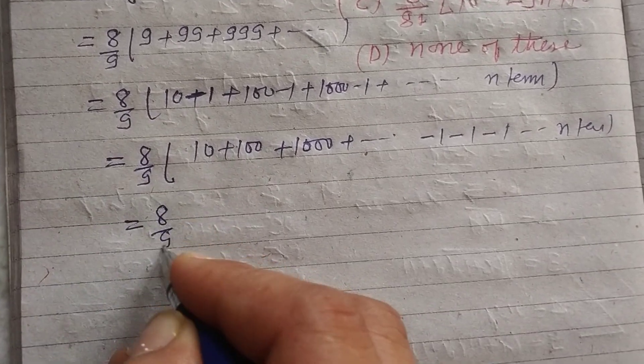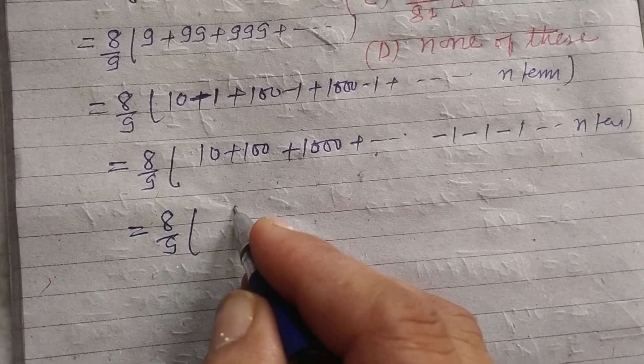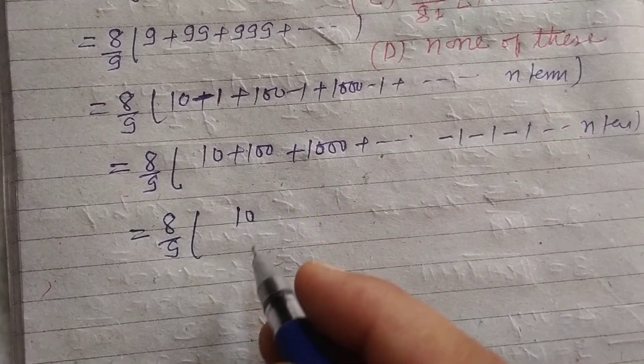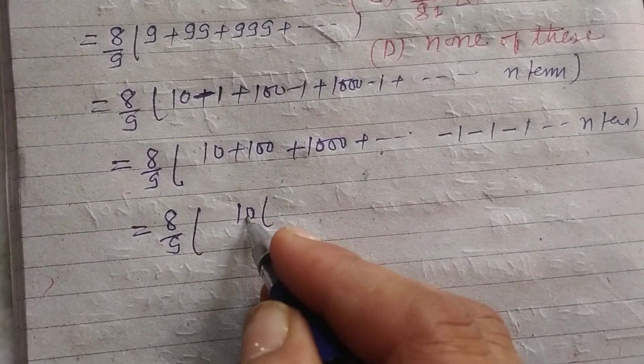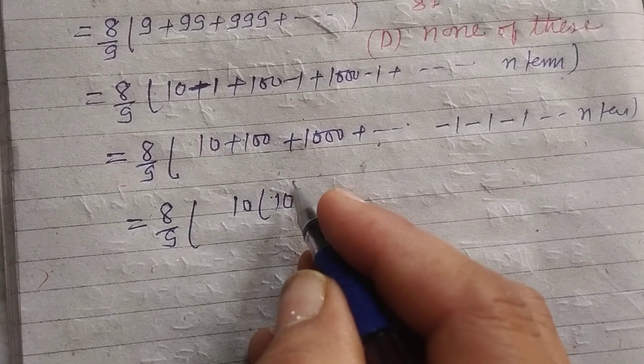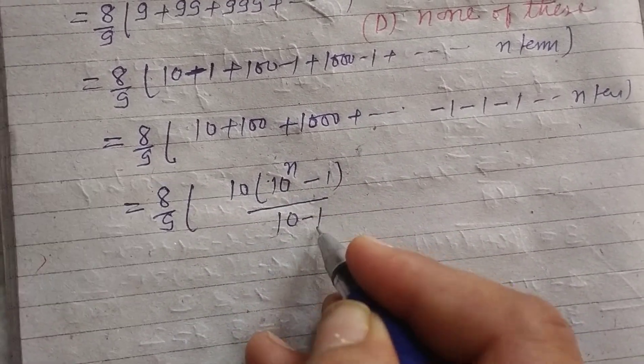So 8 upon 9, this is a geometric progression whose first term is 10. Sum of the geometric progression up to n terms: a times r to the power n, where r is also 10, minus 1 upon r minus 1.